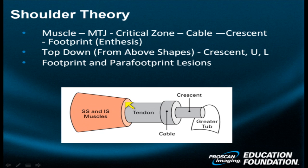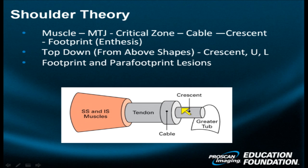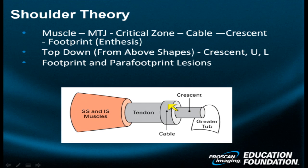Let's continue with more advanced shoulder theory. You've heard about the muscles, the tendons, the myotendinous unit, and then the thickened condensed fibrotic cable of variable thickness. Then the crescent — drawn as a straight structure for educational purposes, though it's more arcuate in shape — and the eventual insertion or footprint on the humerus greater tuberosity. The size, dominance, and thickness of the cable versus the crescent — the ratio of these two — will determine what type of retracted tear you see.